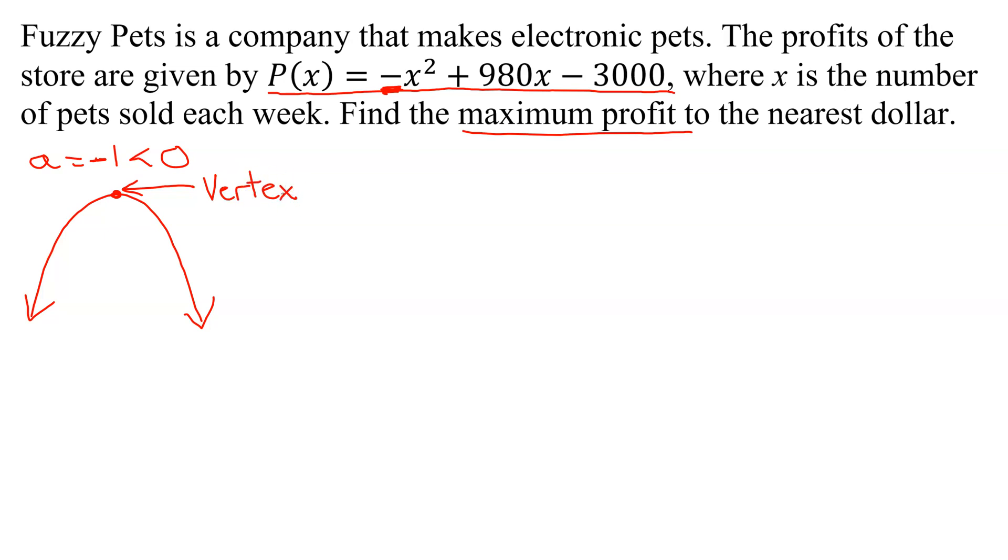So all this problem really is asking you to do is find the vertex. The maximum profit will be at the Y value of the vertex. So how do you find the vertex of a quadratic function? There's a formula for the X value of the vertex. The X value of the vertex equals negative B over 2A.